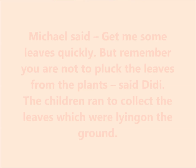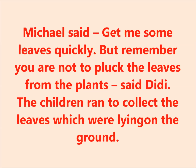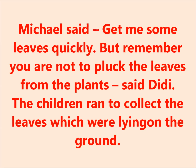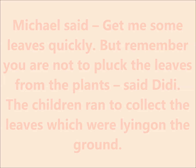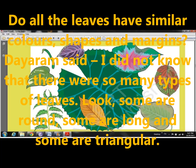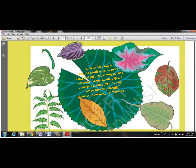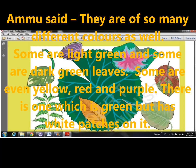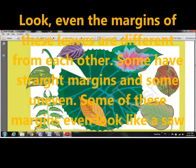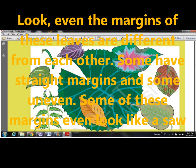Michael said let us get some leaves quickly, but remember you are not to pluck the leaves from the plant. The children ran to collect the leaves lying on the ground. Now the children noticed that all leaves do not have the same color, shapes, and margins. Some are round, some are long, some are small, and some are triangular. Some leaves are light green in color, some are dark green, and some are yellow, red, and purple. There is one which is green but has white patches on it. Some leaves have straight margins, some are uneven, and some margins look like a saw.